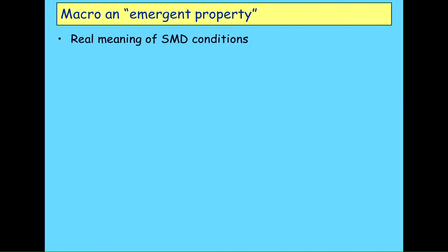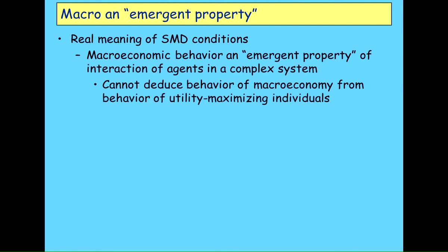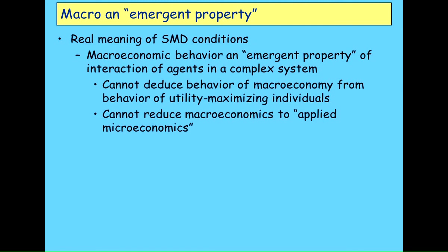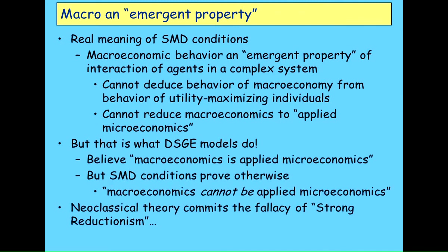The real meaning of the SMD conditions is that macro is an emergent property. You'll hear people working in complexity theory quite frequently use that term. Economics has given a brilliant example of emergent properties: add together two perfectly properly functioning downward-sloping individual demand curves, you get a squiggly line. That is an emergent property where it's the interaction of agents in the system that generates the behaviour. You cannot reduce macro to applied microeconomics — but that's exactly what DSGE models do, and this is proven wrong by the SMD conditions.